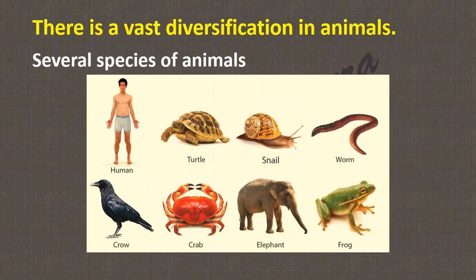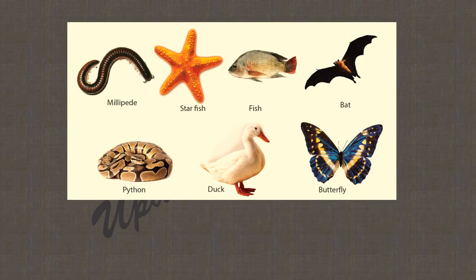Now refer to this diagram. Here you can see several species of animals: human, turtle, snail, worm, crow, crab, elephant, and frog. In another diagram you can find millipede, starfish, fish, bat, python, duck, and butterfly.